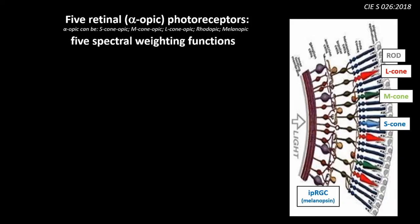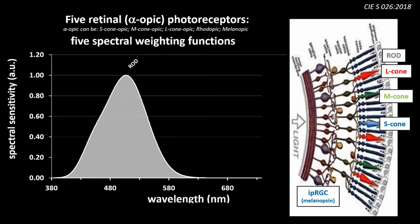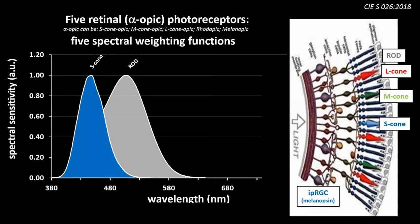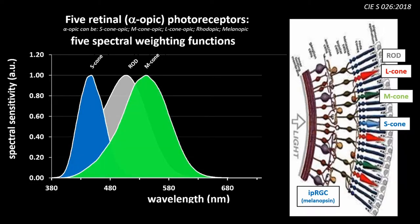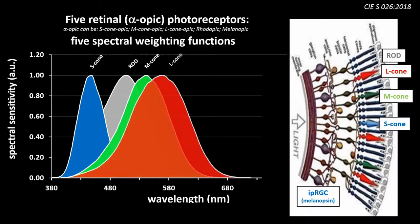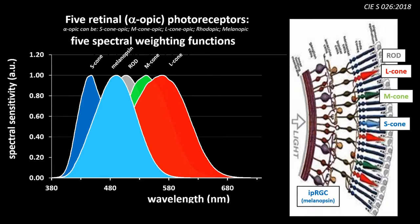The standard provides five action spectra to describe the spectral sensitivity of each of these five photoreceptors. On the screen right now, you can see the rhodopic action spectrum, the S-cone-opic action spectrum, the M-cone-opic action spectrum, the L-cone-opic action spectrum, and the melanopic action spectrum.